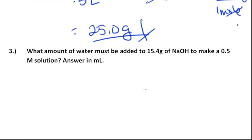In this next one, you are asked to find how much water needs to be added to 15.4 grams of sodium hydroxide to make a 0.5 molar solution. So first, let's convert 15.4 grams to moles,